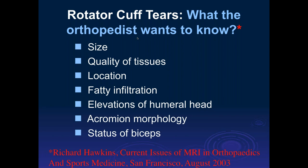When giving a report, there are seven things shoulder surgeon Richard Hawkins wants to see: the size of the rotator cuff tear, quality of surrounding tissues, location of the tear, whether there's significant fatty infiltration within rotator cuff muscles, is there elevation of the humeral head, what is the morphology of the acromion process, and the status of the biceps tendon. These should always be in your report, especially if there's any rotator cuff pathology.